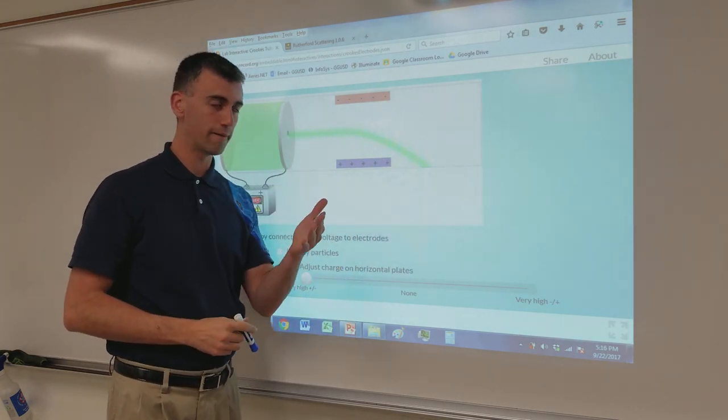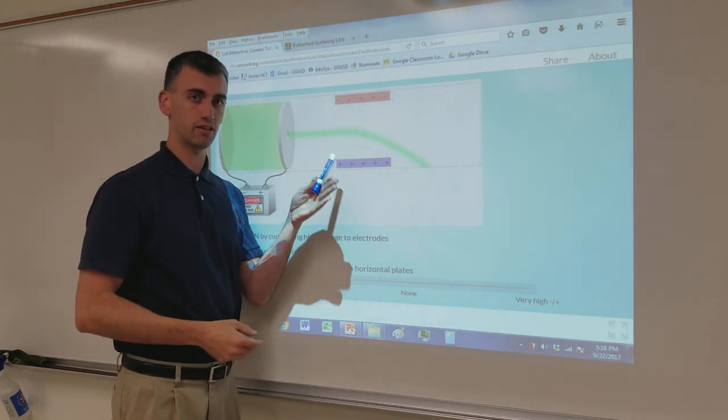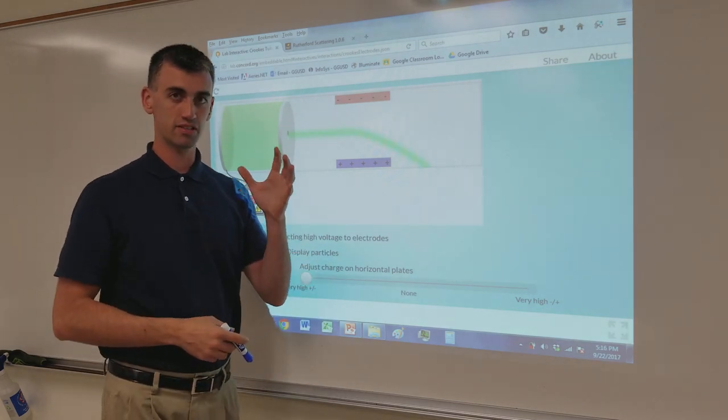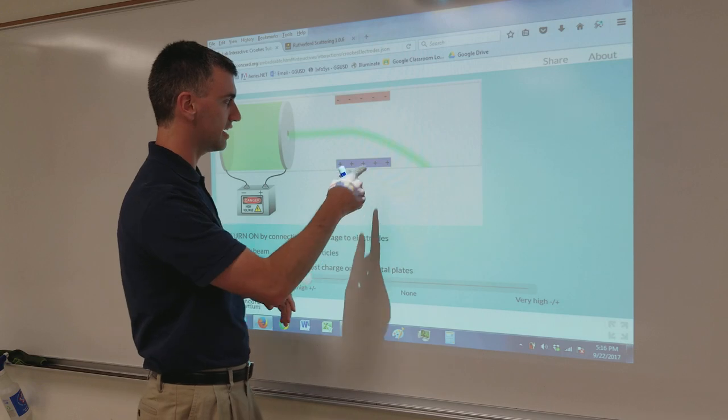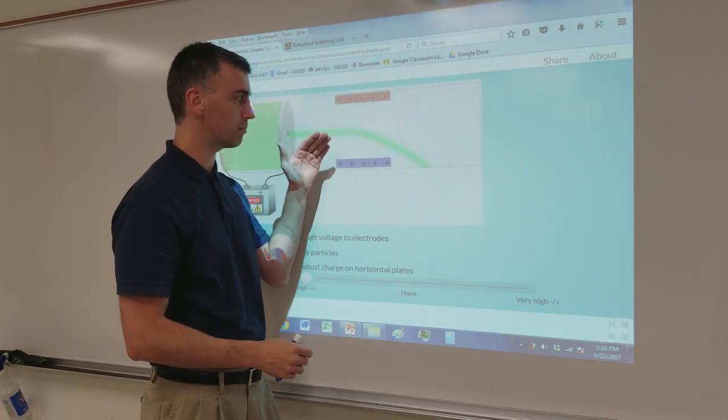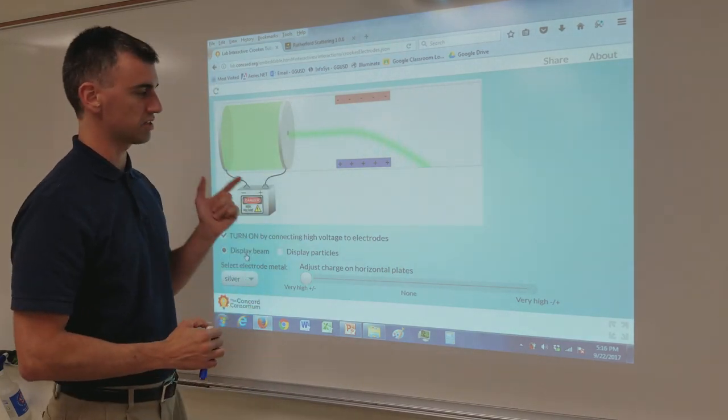What this showed is that whatever this is composed of, it's clearly composed of negatively charged particles, because we know that opposites attract in terms of electrical charges. Thus, if it's being attracted toward the positive plate, it must be composed of negatively charged particles.